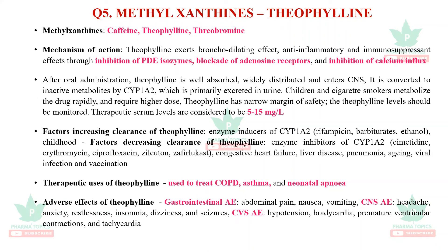Question five is methylxanthines. They may ask a short note on methylxanthines or theophylline. The methylxanthines include caffeine, theophylline, and theobromine; among these, theophylline is most widely used. The mechanism: theophylline exerts bronchodilating, anti-inflammatory, and immunosuppressant effects through inhibition of phosphodiesterase enzymes, blockade of adenosine receptors, and inhibition of calcium influx. After oral administration, theophylline is well absorbed and widely distributed, converted to inactive metabolites by cytochrome enzyme CYP1A2, and excreted in urine.